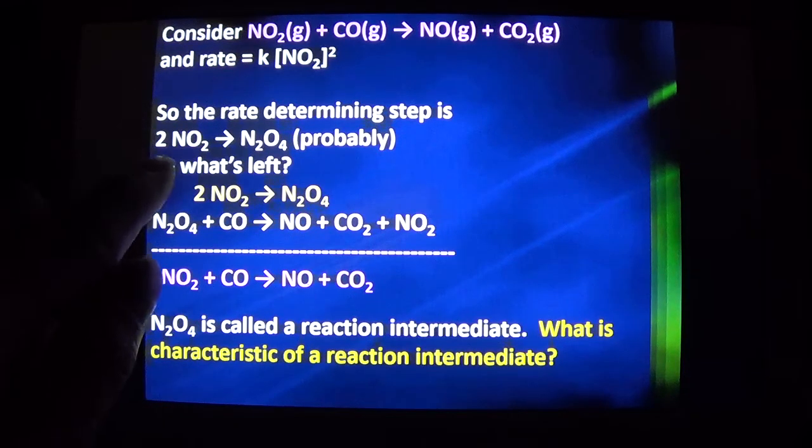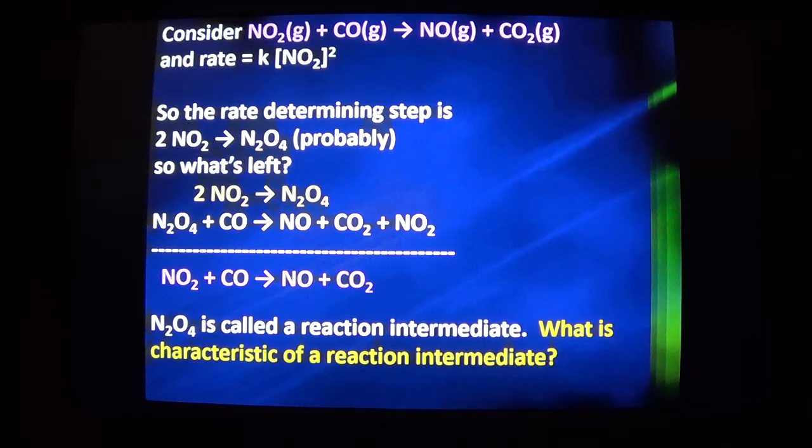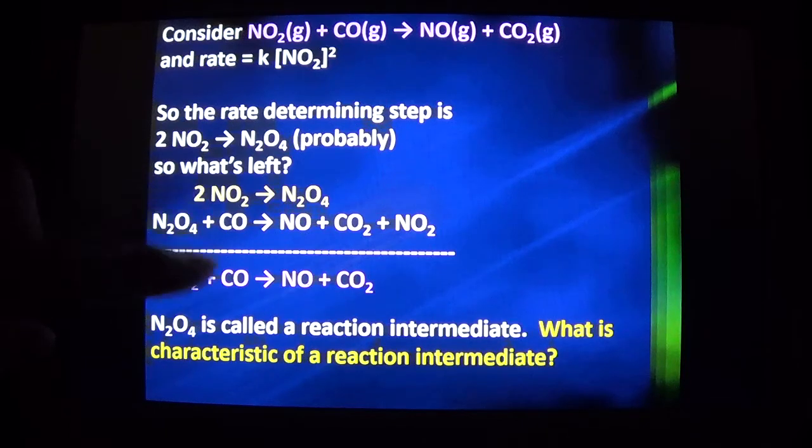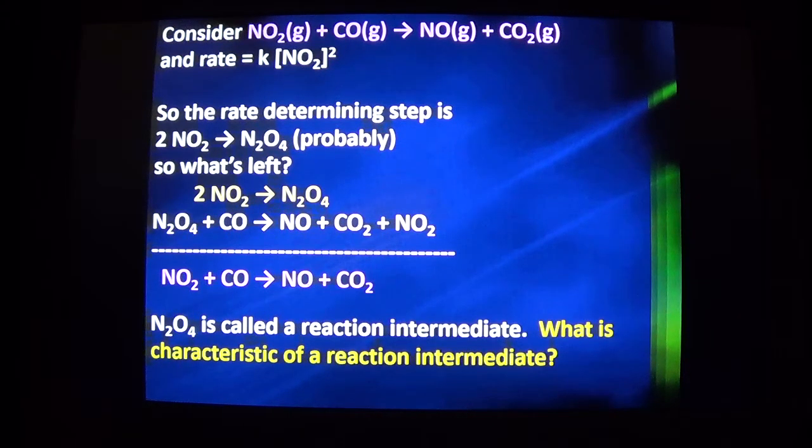That leads us to probably think our slow step looks like that. It's a puzzle. It is known to us what the overall equation is. It is known to us what the rate determining slow step is. The question is, what can I add to the slow step to get to the overall equation? By process of elimination, we come up with the N2O4 then reacts with CO and forms NO and CO2 and NO2. How did I get that? Guess and check. It was guesswork.